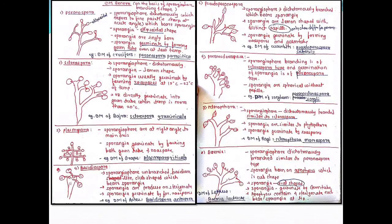The primary source of infection of this downy mildew pathogen is oospores, which are present in the soil and serve as dormant structures during the absence of the main host. Dormant mycelium is also present in infected maize seeds, and these serve as a primary source of infection.